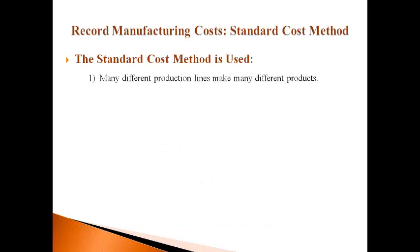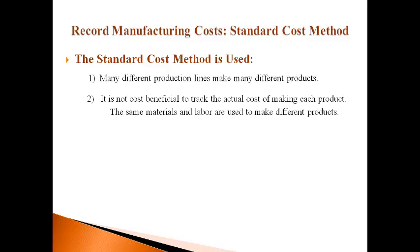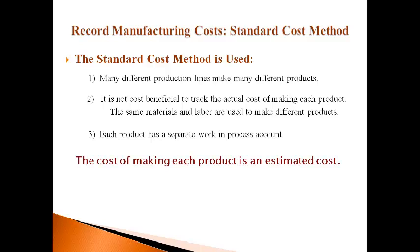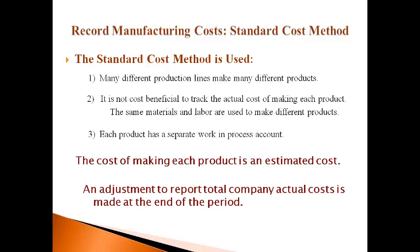The standard cost method is used to record manufacturing costs when the direct labor works on many different production lines and makes many different products, and the same types of direct materials are used. The volume and variety of products and processes makes it very expensive to track the actual cost of making each product. The estimated cost of making each type of product is recorded to a separate work in process account, and an adjustment is made at the end of the period to get the ending balances to the company's total actual cost.